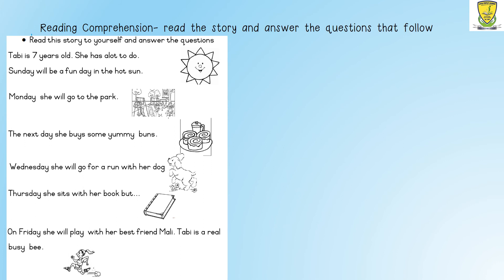Okay children, I hope you listened carefully because now you are going to read with me. Remember, point as you read. Tabby is seven years old. She has a lot to do. Sunday will be a fun day in the hot sun. Monday, she will go to the park. The next day, she buys some yummy buns. Wednesday, she will go for a run with her dog. Thursday, she sits with her book. But on Friday, she will play with her best friend Mally. Tabby is a real busy bee.